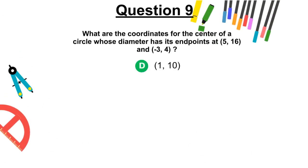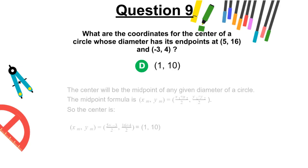The correct answer is D, (1, 10). The center will be the midpoint of any given diameter of a circle. The midpoint formula is (xₘ, yₘ), which equals the following. So the center is the following.